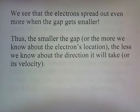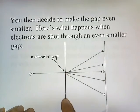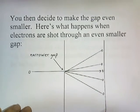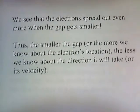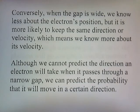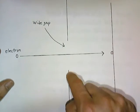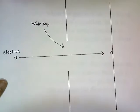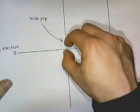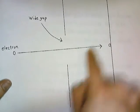Remember, the Heisenberg Uncertainty Principle says we can't know both position and velocity at the same time, and this illustrates it. The smaller the gap, the more we know about its position, but the less we know about the velocity or the direction it's going to take. Conversely, when the gap is wide, we know less about the electron's position, but it is more likely to keep the same direction or velocity, which means we know more about its velocity. Wide gap: we don't know as much about its position, but we do know its direction or velocity. You trade one off for the other — big gap, you know the velocity; narrow gap, you know its position, but then you lose the ability to predict its direction or velocity.